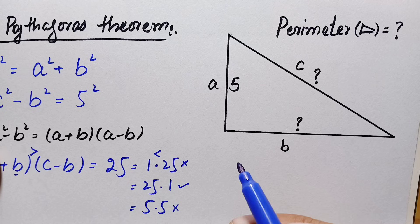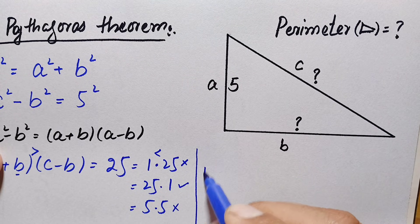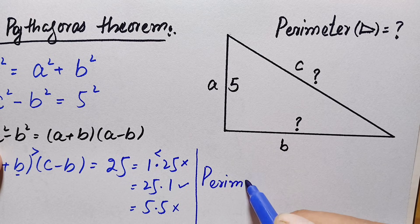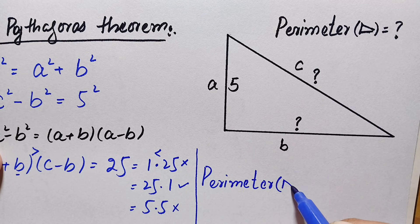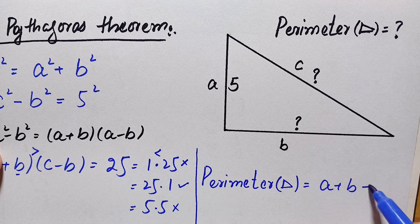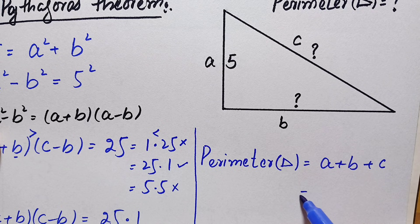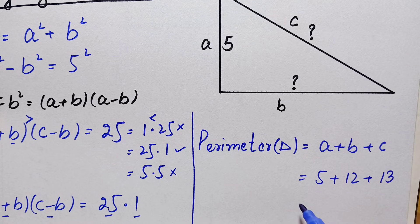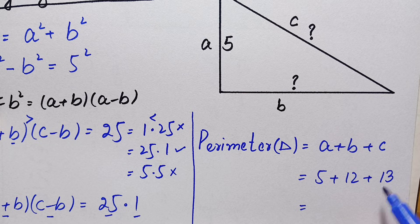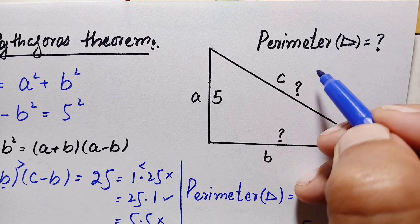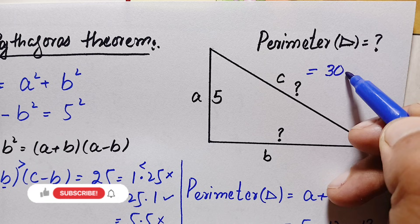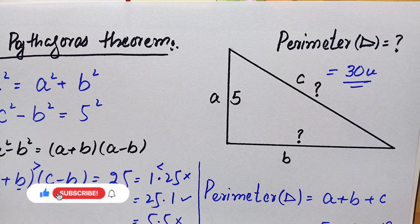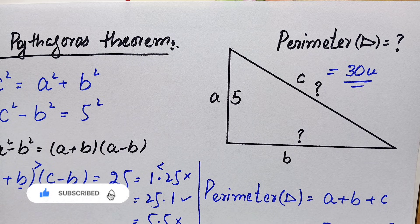Therefore, the perimeter of this right angle triangle is the sum of all three sides: a + b + c = 5 + 12 + 13. So 5 + 12 = 17, and 17 + 13 = 30. The perimeter is 30 units, which is our final answer. Don't forget to subscribe to my YouTube channel for more interesting step-by-step geometry solutions. Thanks for watching!